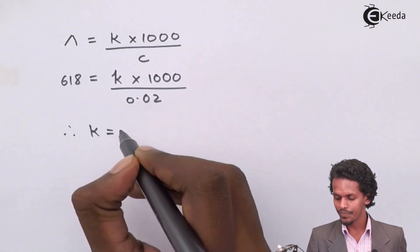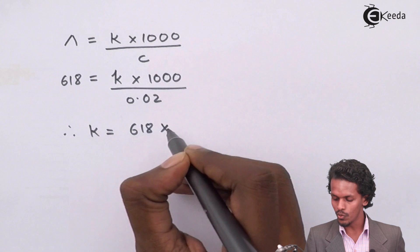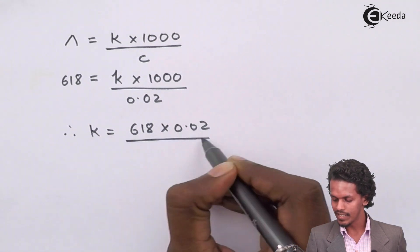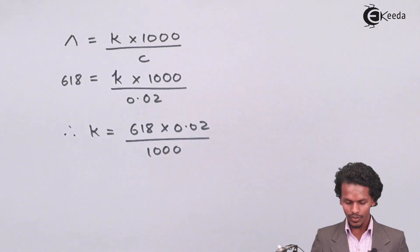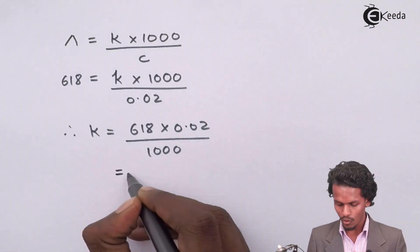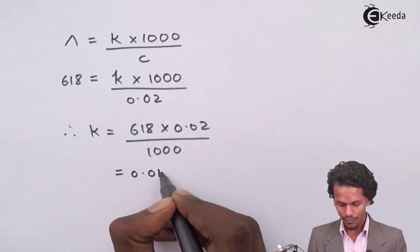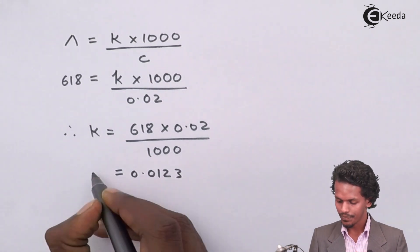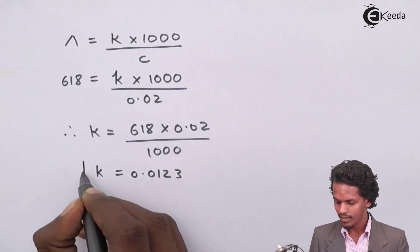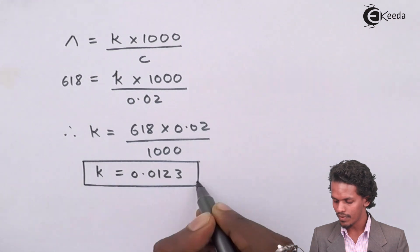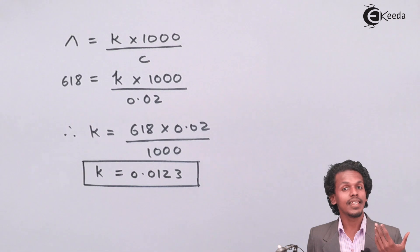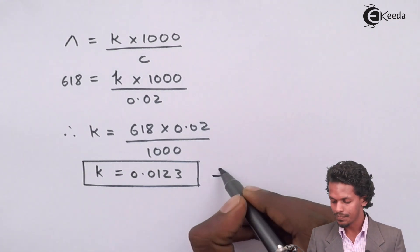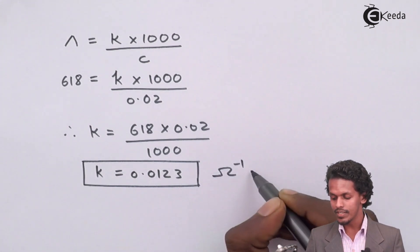Therefore, the value of k will be 618 times 0.02 divided by 1000. The answer that we get is 0.0123, and the unit of conductivity is ohm inverse centimeter inverse.